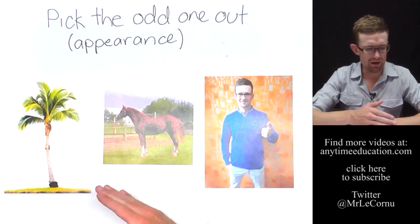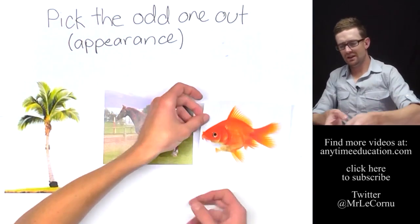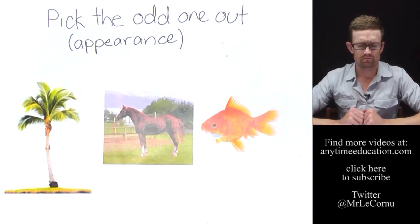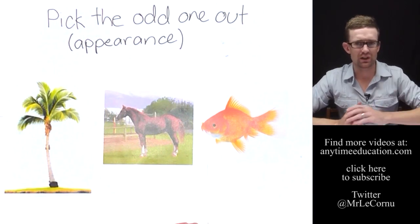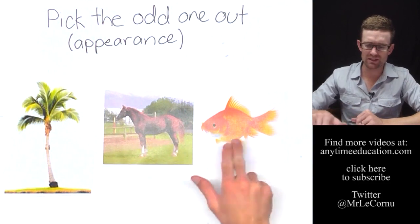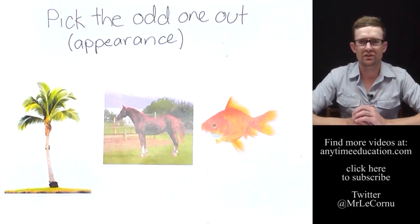What about palm tree, horse, and goldfish? Hmm, still palm tree. We've still got more similar features between these two animals here than we do over here.